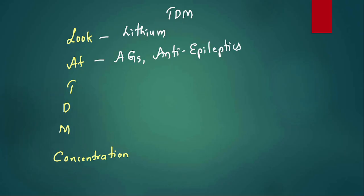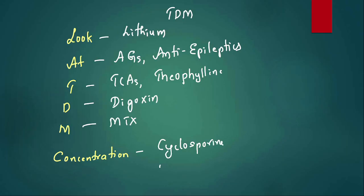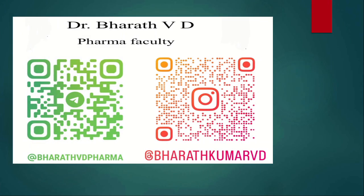Drugs requiring TDM — mnemonic: 'LADTDMC'. L: lithium. A: aminoglycosides. A/E: anti-epileptics like valproate and phenytoin. T: tricyclic antidepressants and theophylline. D: digoxin. M: methotrexate. C: calcineurin inhibitors like cyclosporine and tacrolimus. With that, we are ending this Fantastic 5 MCQs session. Hope you found it useful — any feedback in the comment section. Thank you all, take care.